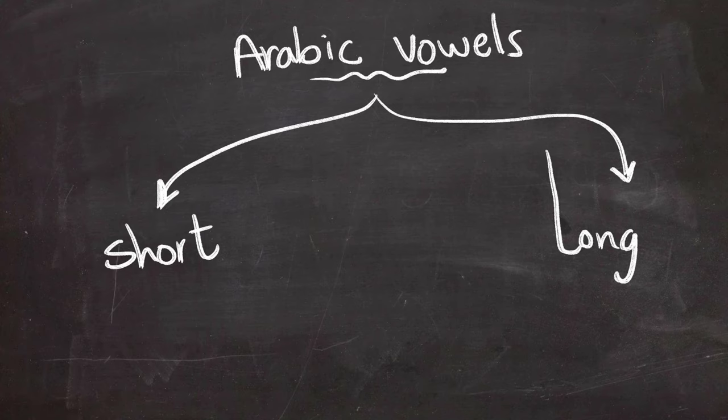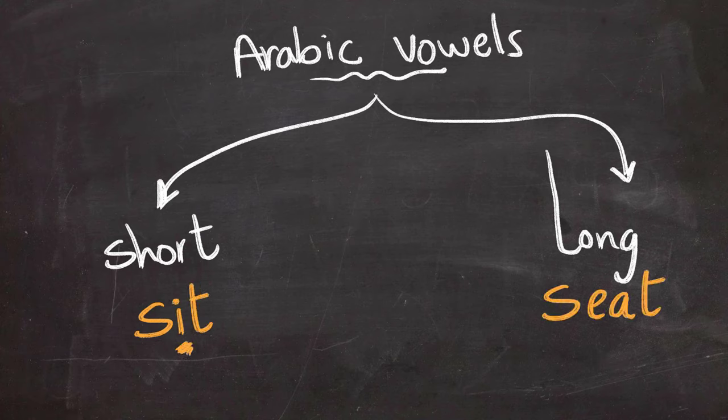Short vowels are found in words like sit for example, and long like in the word seat. In Arabic we tend to only write the consonants and leave all the vowels out. And vowels are written differently, not like in English.